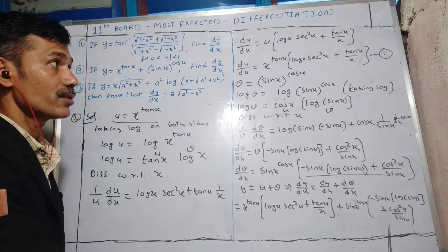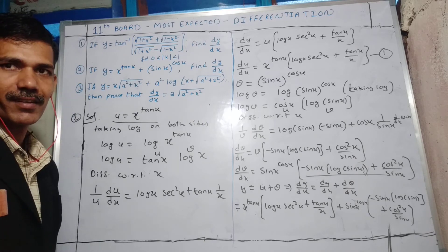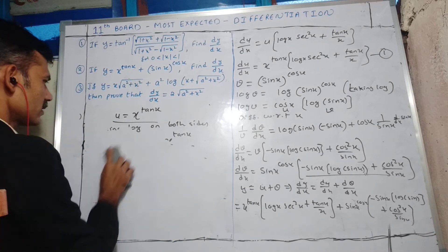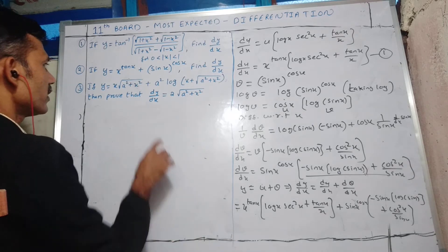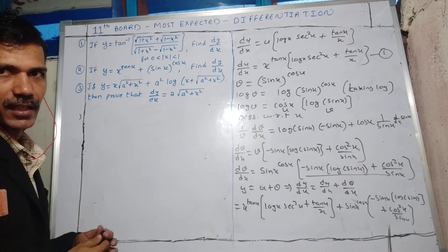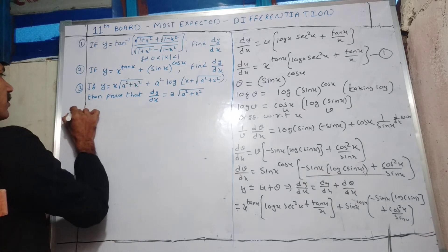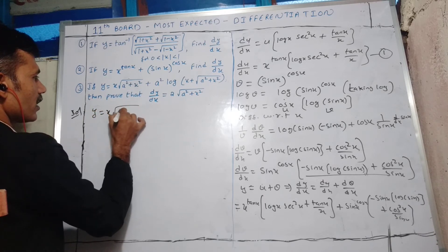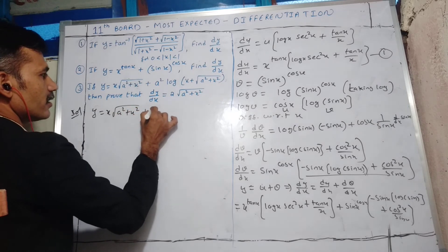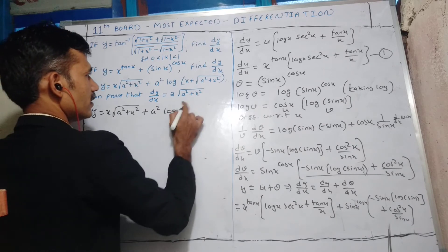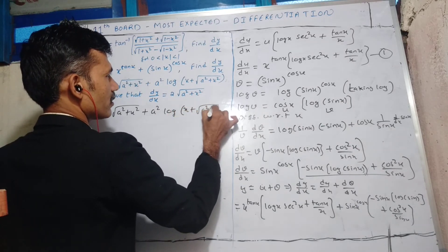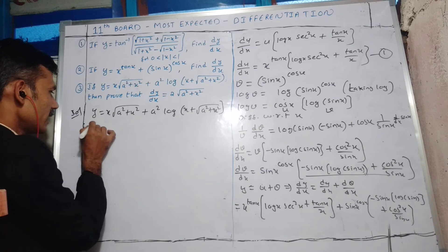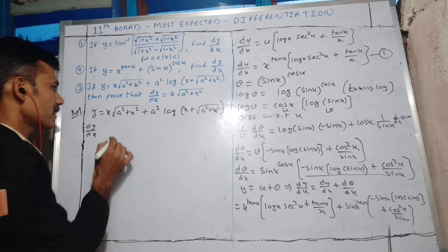It is a long question — we have to solve like this. Now the third question: we have to prove that dy/dx = 2√(a²+x²), where y = x·√(a²+x²) + a²·log(x + √(a²+x²)). We need to find dy/dx by differentiation.